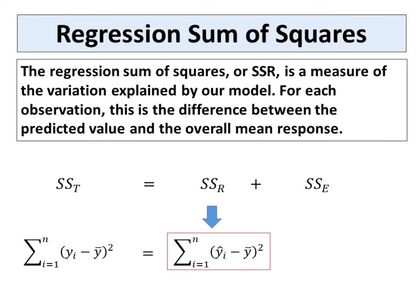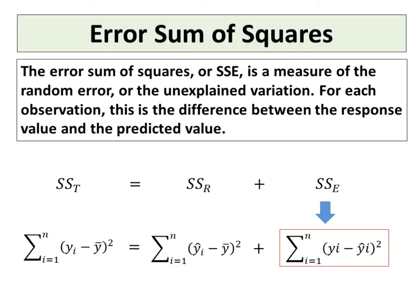The regression sum of squares, or SSR, is a measure of the variation explained by our model. SSR is the difference between the predicted value and the overall mean response. The error sum of squares, or SSE, is a measure of the random error or the unexplained variation. SSE is the difference between the response value and the predicted value.